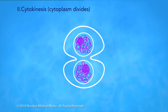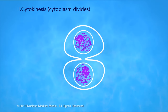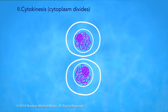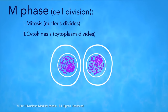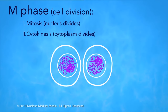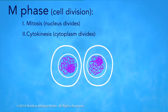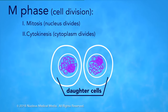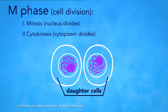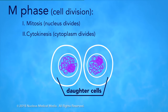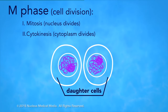Cytokinesis is division of the cytoplasm, and the M phase is complete after cytokinesis occurs. The M phase of the cell cycle always results in two daughter cells, both identical to each other and identical to the original cell that underwent mitosis.